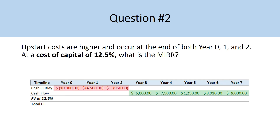Example number two. In this case, startup costs are higher and occur at the end of year zero, one, and two. At a cost of capital of 12.5%, what is the modified internal rate of return? We're assuming the investment takes two years to complete — a $10,000 investment in year zero, a $4,500 investment in year one, and a $950 investment in year two. We want the cash outflow in present value terms, so the cash outflows in year one and year two need to be discounted back to the present using the rate of 12.5%.